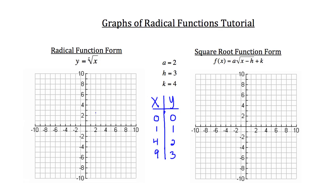Then you would just go about plotting these: the first point (0, 0), then (1, 1), then (4, 2), and lastly (9, 3). I'll go ahead and connect those points for you. So our graph would look something like that.